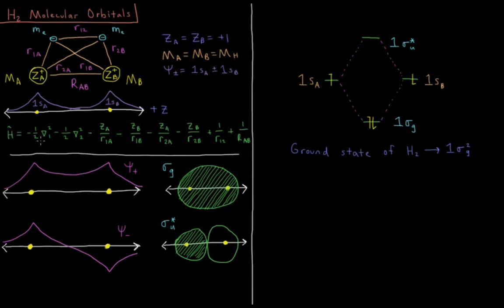And our Hamiltonian was a sum of all of those terms I mentioned, kinetic energy of electron 1 and electron 2, attraction of electron 1 to Nucleus A, attraction of electron 1 to Nucleus B, attraction of electron 2 to Nucleus A, attraction of electron 2 to Nucleus B, repulsion of the electrons from one another, and the repulsion of the nuclei from one another.